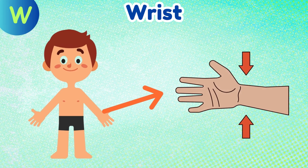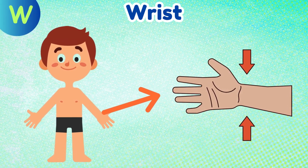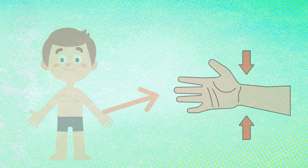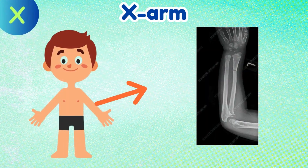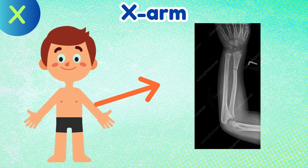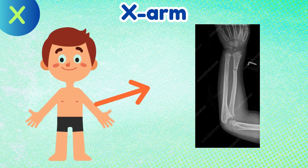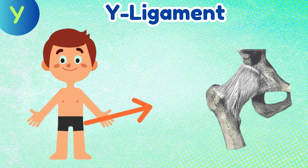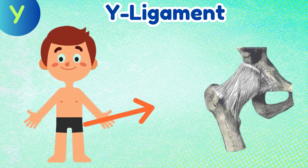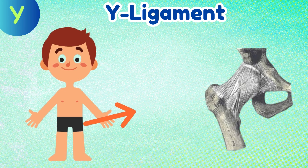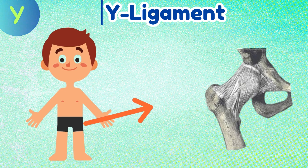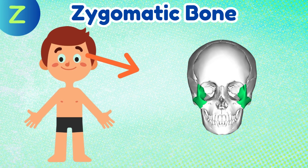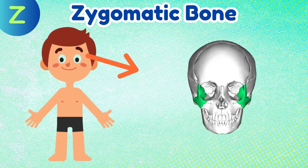W: Wrist. X: Arm. Y: Ligament. Z: Zygomatic bone.